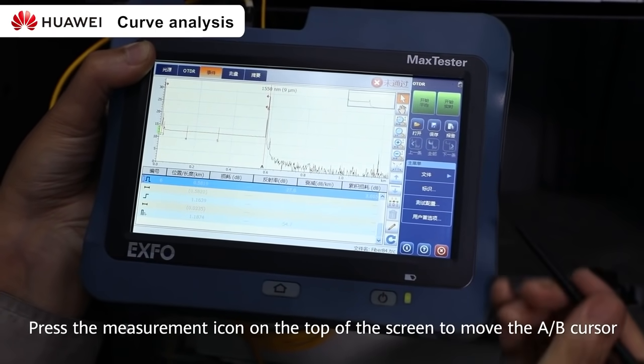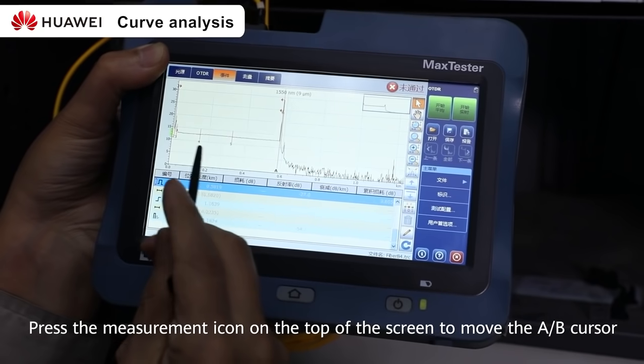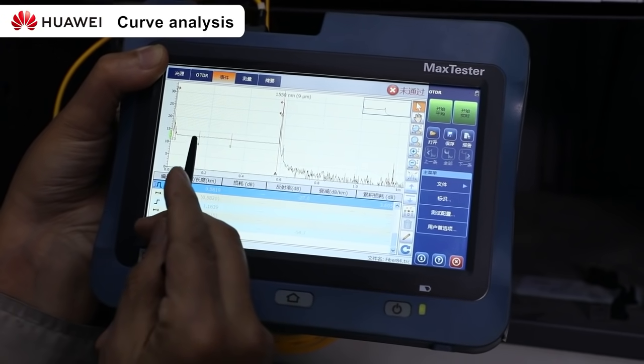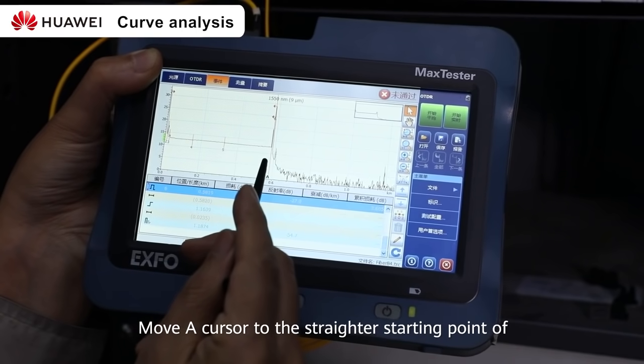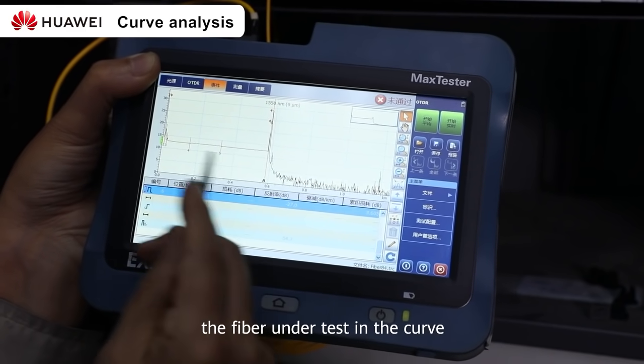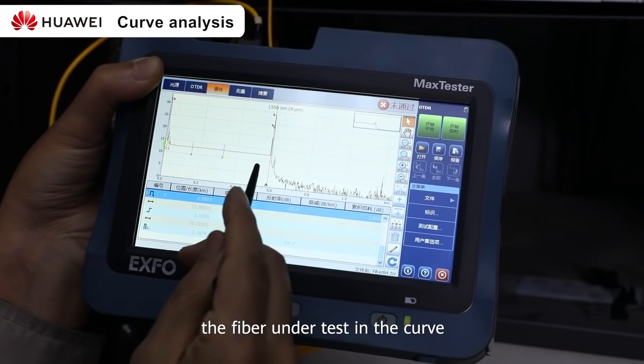Press the measurement icon on the top of the screen to move the AB cursor. Move A cursor to the starting point of the fiber under test in the curve.